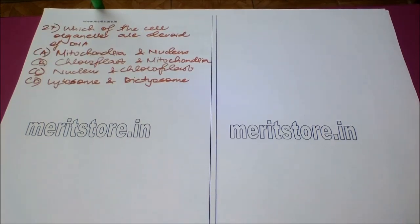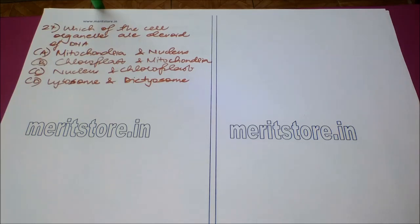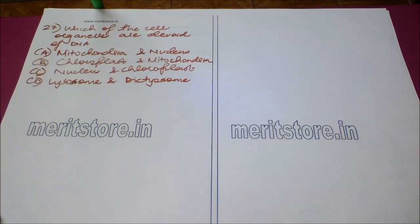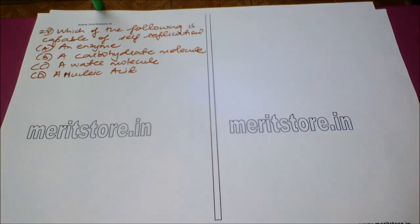Which of the following cell organelles are devoid of DNA? Option A: mitochondria and nucleus, Option B: chloroplast and mitochondria, Option C: nucleus and chloroplast, and Option D: lysosome and ribosome. The correct answer is Option D: lysosome and ribosome.